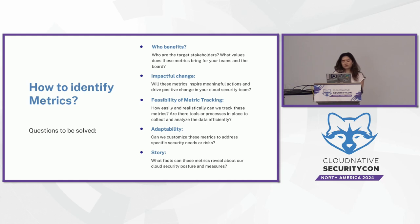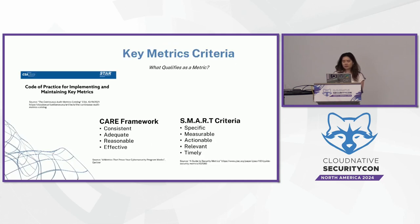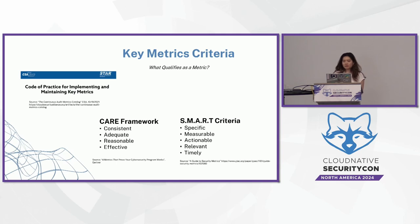You might also think about the tools you currently have — can you collect and track metrics from your current toolset? Because tracking metrics shouldn't be an extra cost. At the end of it, metrics need to have some context — the story you want to share about your cloud security posture to your senior stakeholders. Think about how the security posture of your cloud-native environment has improved over time. How well is your security team performing? How well are your developers collaborating with your security team? Those are the questions you want to ask to create a full picture. I've also provided some criteria and frameworks on the slide that might be useful.